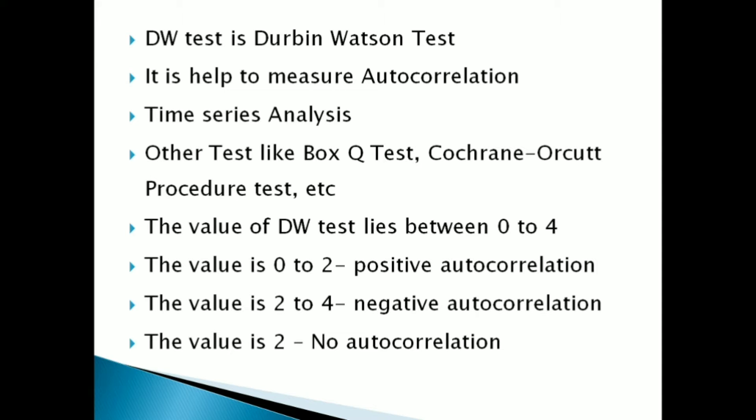Always the value of DW test lies between 0 to 4. Suppose the answer of DW test or the value of your DW test lies between 0 to 2, there is a positive autocorrelation.